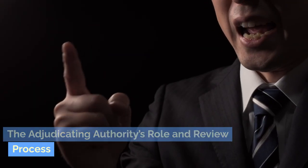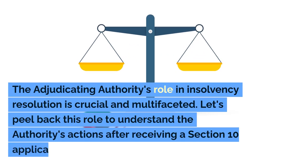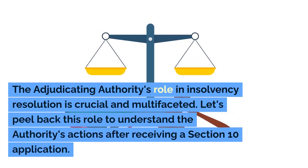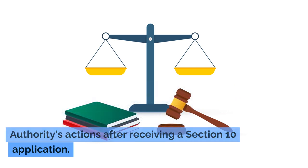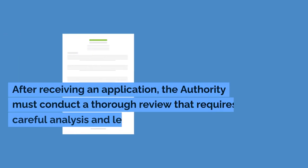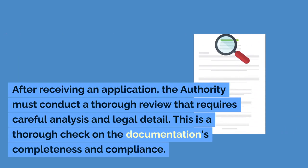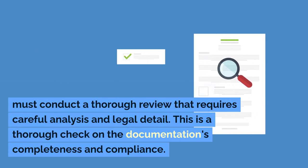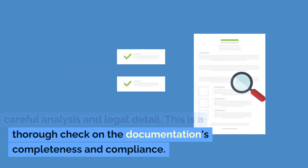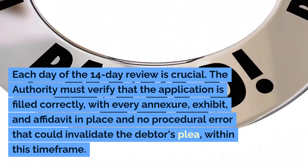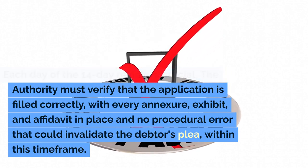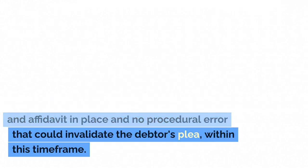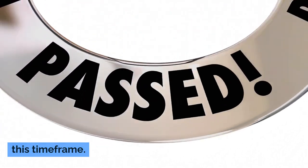The adjudicating authority's role in insolvency resolution is crucial and multifaceted. After receiving a Section 10 application, the authority must conduct a thorough review requiring careful analysis and legal detail — a thorough check on the documentation's completeness and compliance. Each day of the 14-day review is crucial. The authority must verify that the application is filled correctly, with every annexure, exhibit, and affidavit in place and no procedural error that could invalidate the debtor's plea.